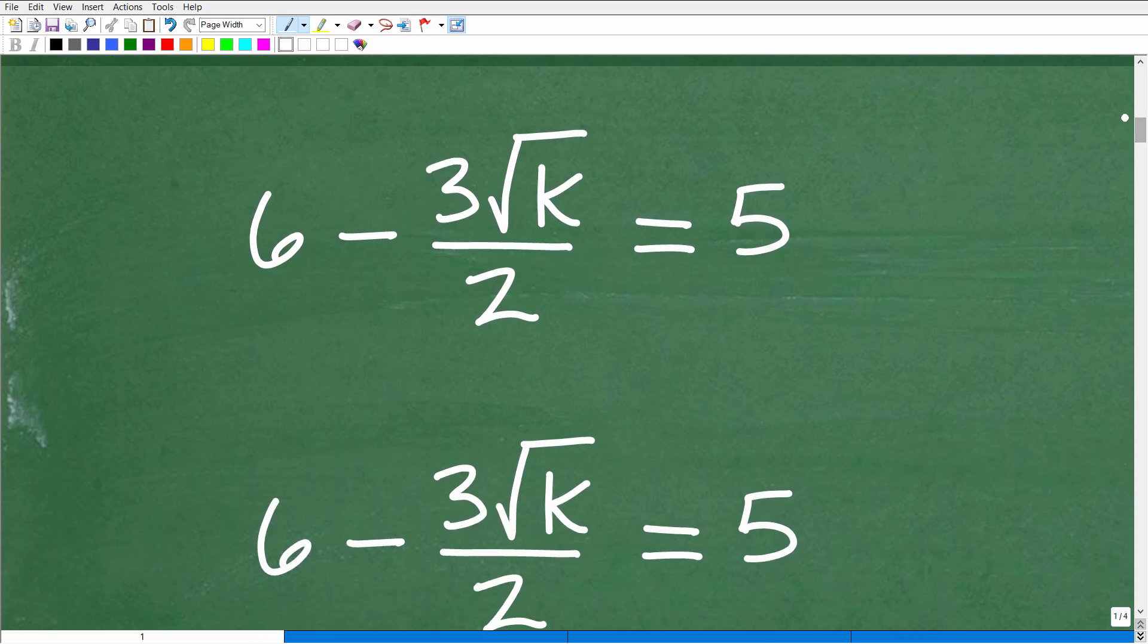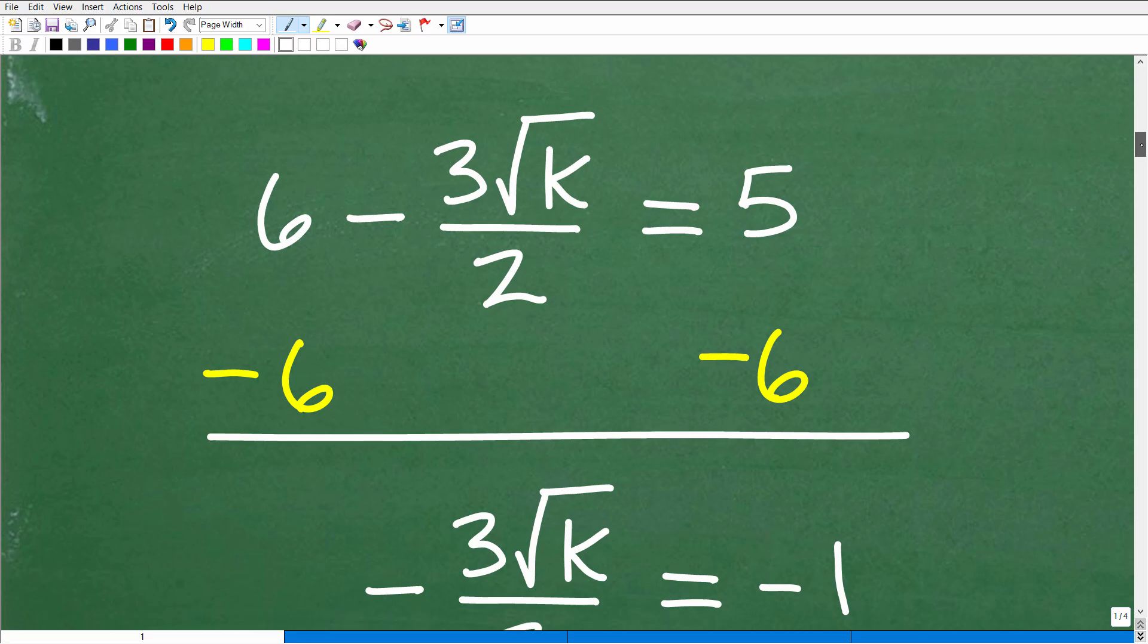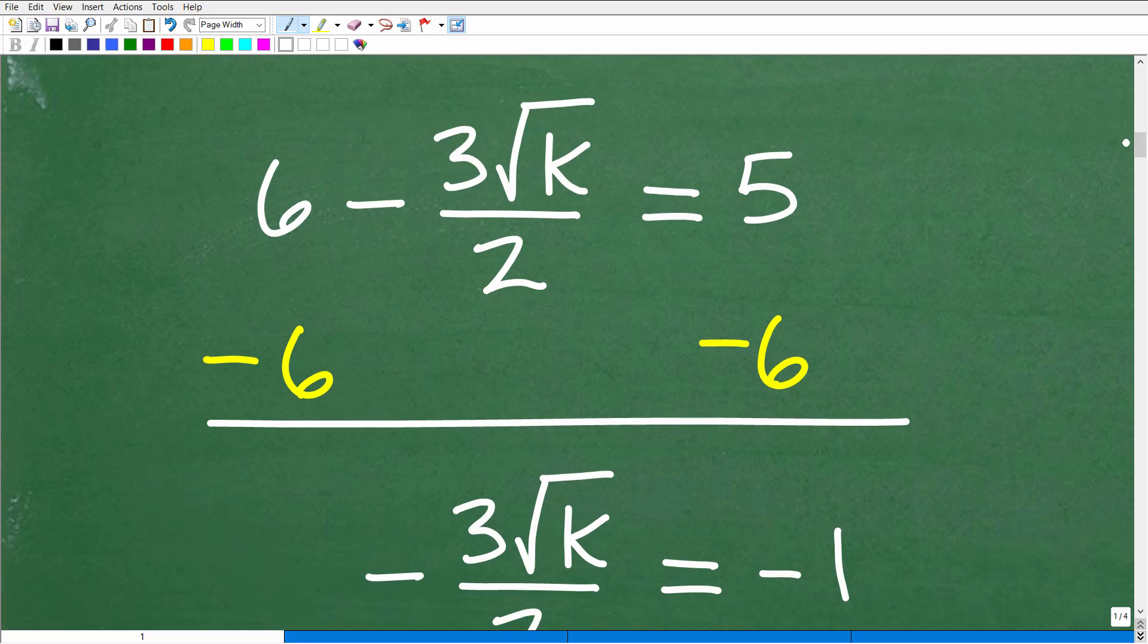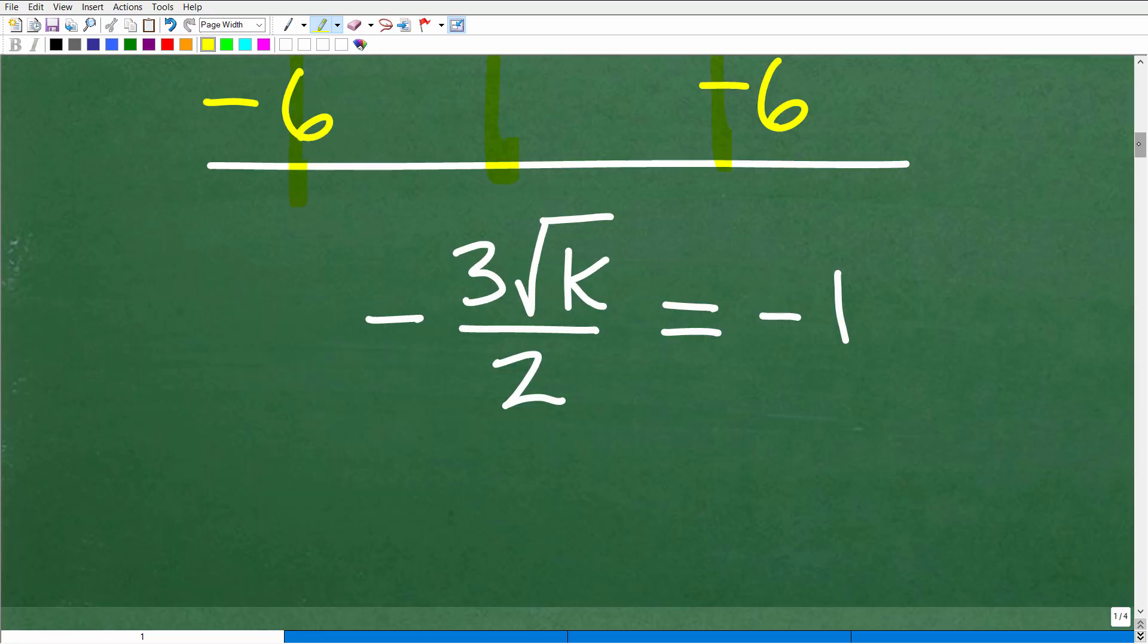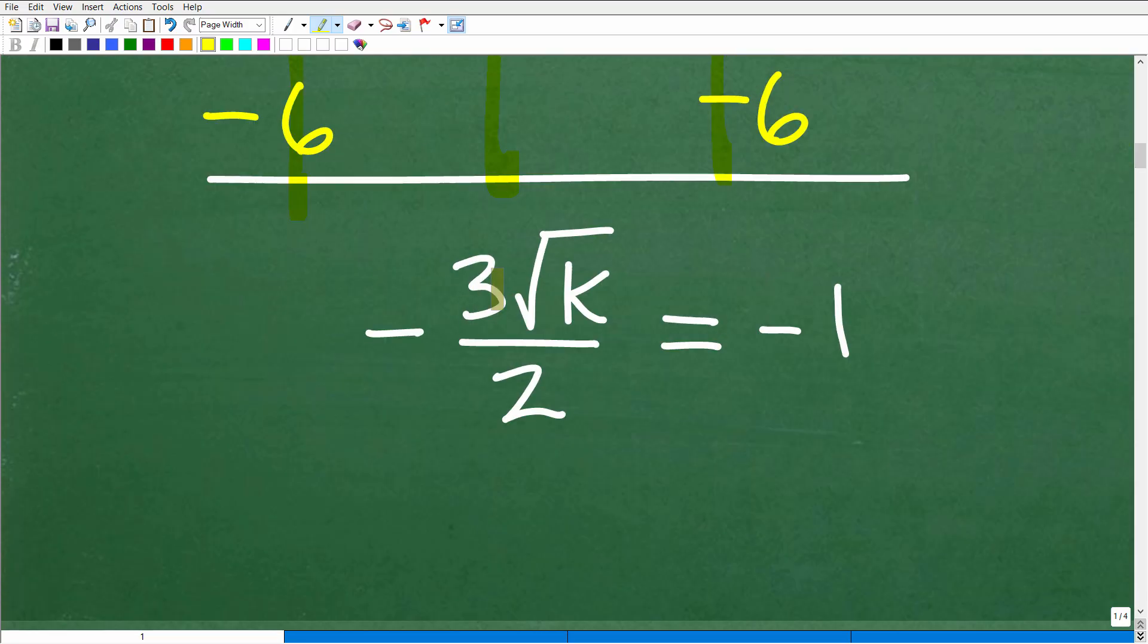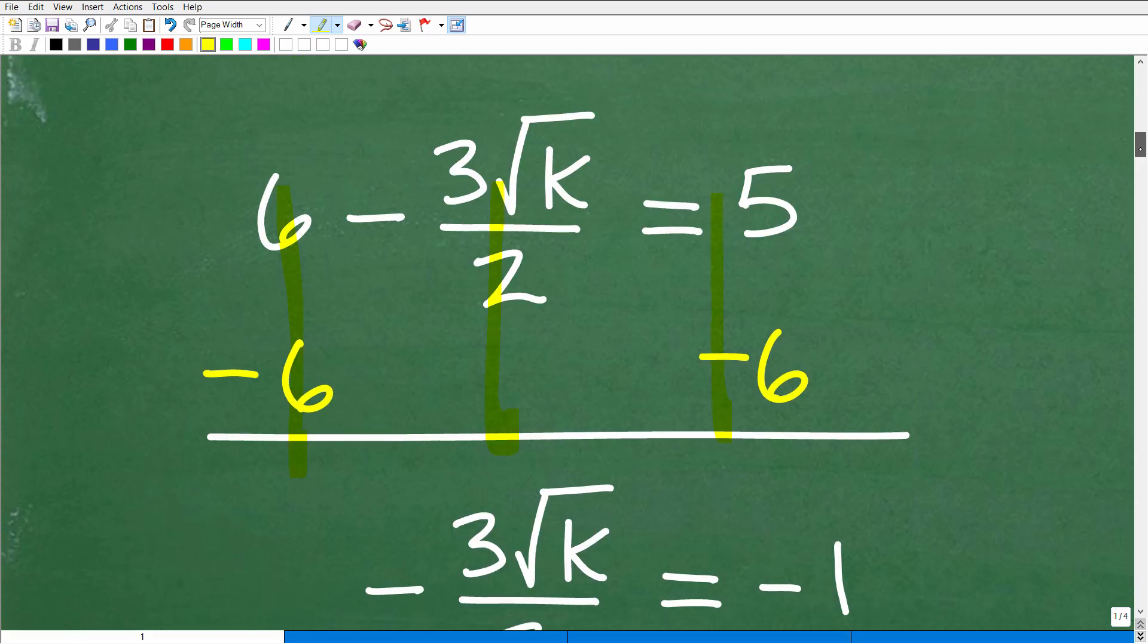Let's get into this problem now. What are we going to do here? The first order of business is to get this variable, the square root of k, all by itself on the left-hand side and all of our numbers on the right-hand side. Hopefully you're pretty strong in basic linear equations. The first thing I'm going to do is subtract 6 from both sides of the equation. It's real basic algebra stuff. When we do that, we get negative 3 times the square root of k over 2 equals negative 1.